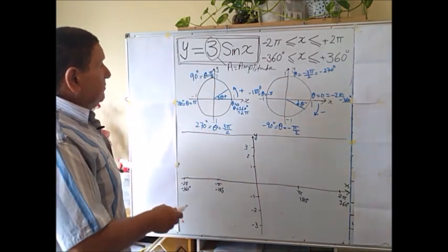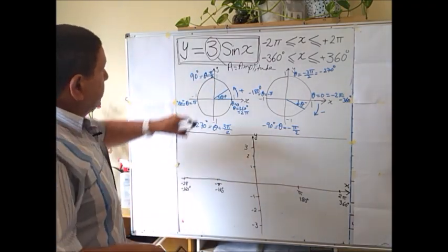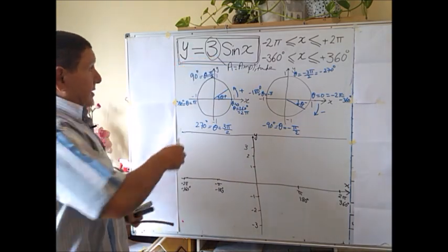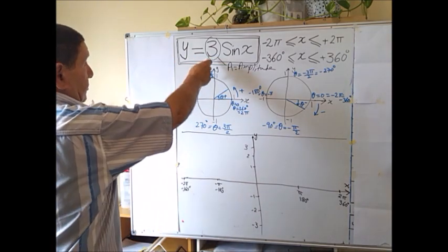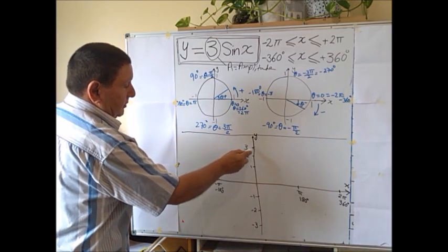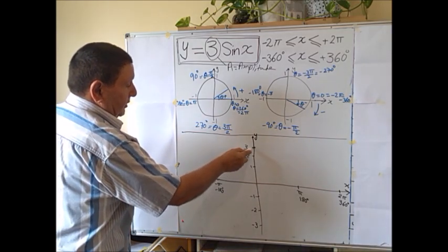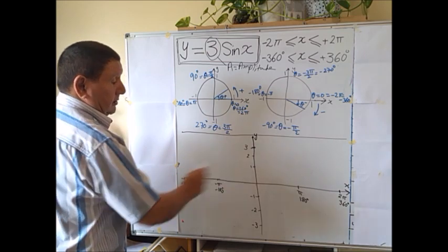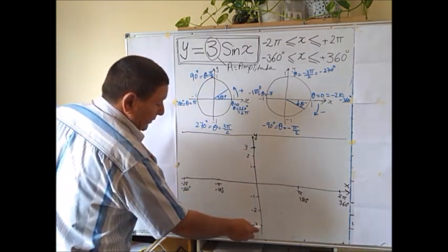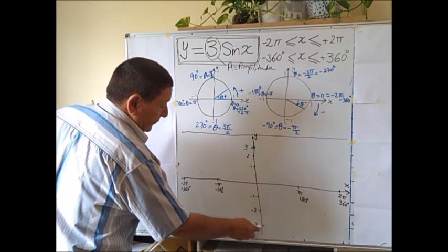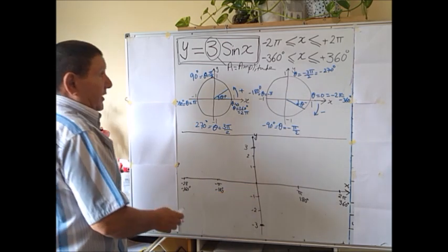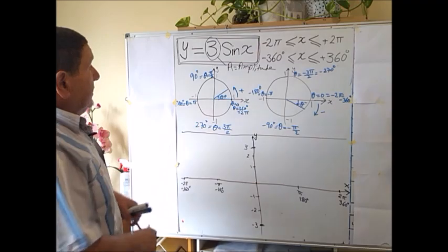In this example the amplitude is 3, so on the y-axis we plot ±3. If there was no 3 — just the basic function — we would only put ±1. So we have +3 and -3 marked on the y-axis.